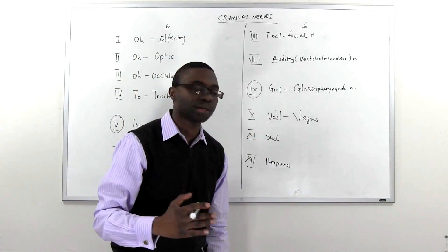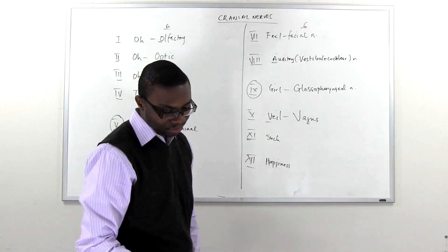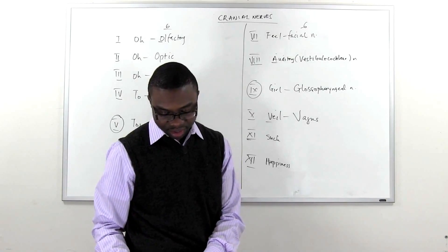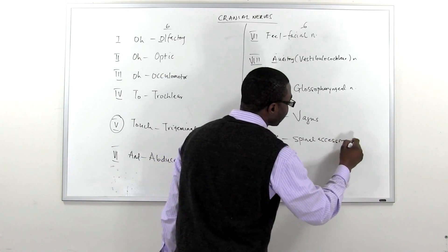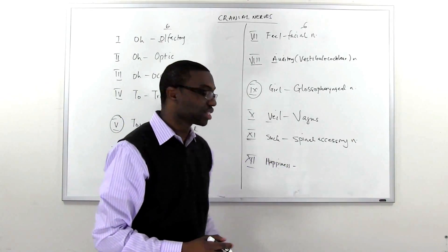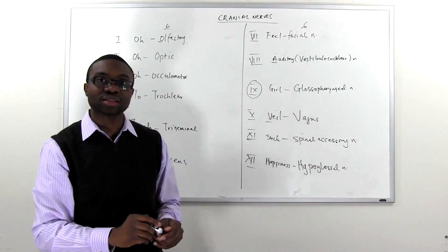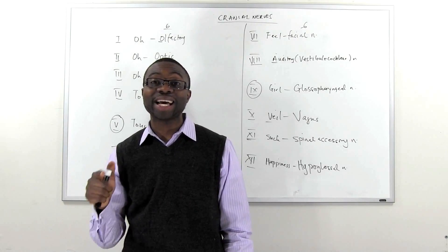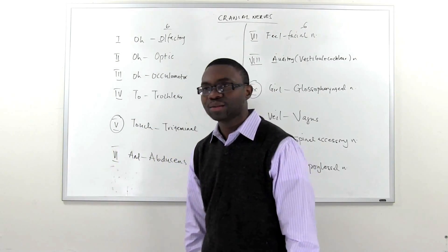And number ten, the veil, is the vagus nerve. I like that, vagus nerve. It's kind of making a statement. And S, which is number eleven, is the spinal... I'm sorry I take that back, the spinal accessory nerve. My apologies for that. That is the spinal accessory nerve which we're going to talk about. And the last one is the hypoglossal nerve. And that's it guys, very straightforward. Oh oh to touch and feel a girl's veil, oh such happiness. All right, now what does this all...